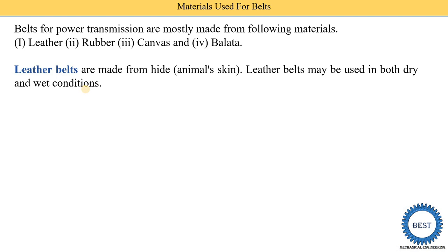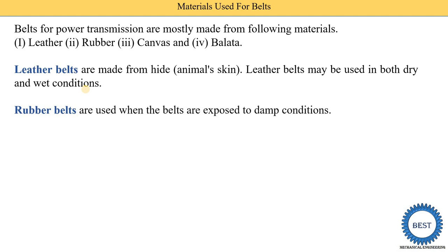Rubber belt is made from rubber and is used when exposed to damp conditions. Damp condition means moisture condition — where there is more moisture in the atmosphere, the rubber belt is used.